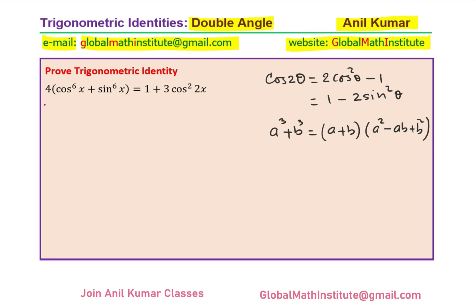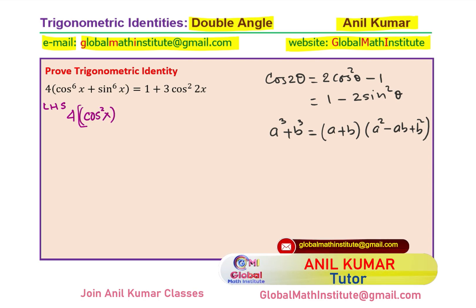Here is how we are going to do it. Let us begin with the left-hand side which is 4 times cos to the power of 6x plus sin to the power of 6x. So it is 4 times cos to the power of 6x, think like this: cos square x whole cube, plus sin to the power of 6x is sin square x whole cube.